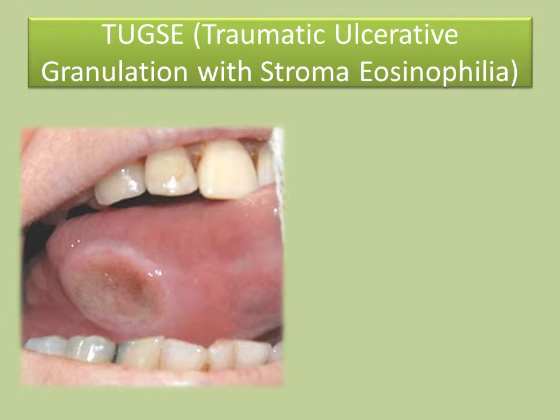The histopathologic features of this condition include an ulceration covered by a fibrinopurulent membrane that consists of fibrin intermixed with neutrophils. The ulcer bed consists of granulation tissue that supports a mixed inflammatory infiltrate of lymphocytes, histiocytes, neutrophils, and occasionally plasma cells. The inflammatory infiltrate extends into the deeper tissues and exhibits sheets of lymphocytes and histiocytes intermixed with eosinophils.